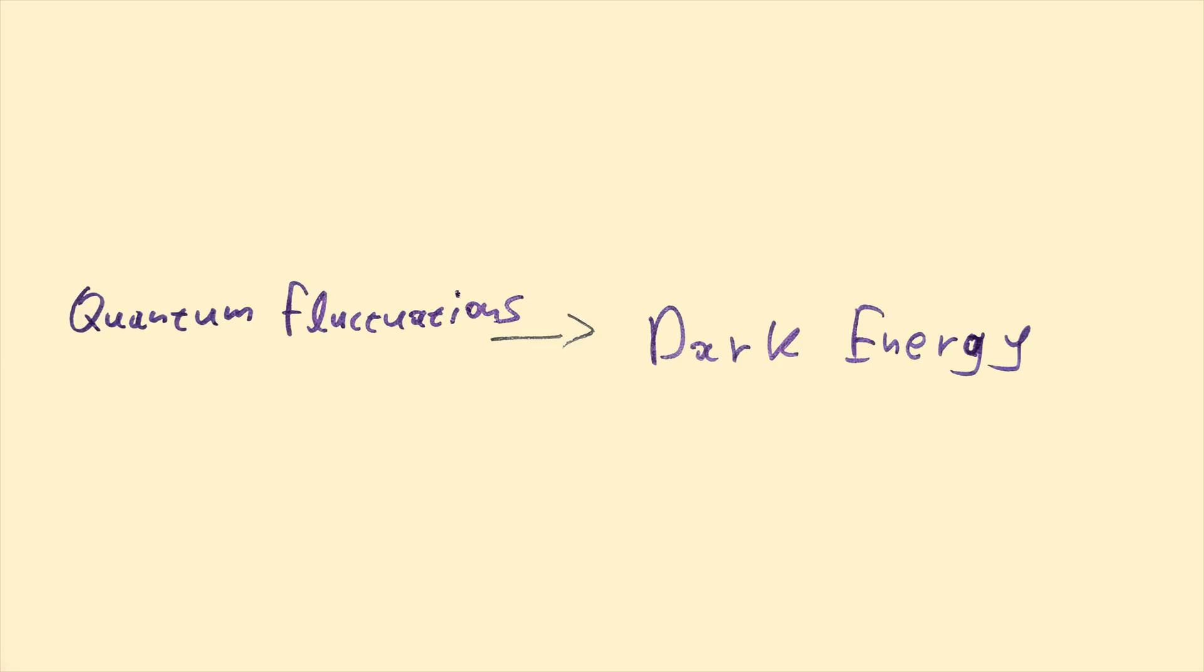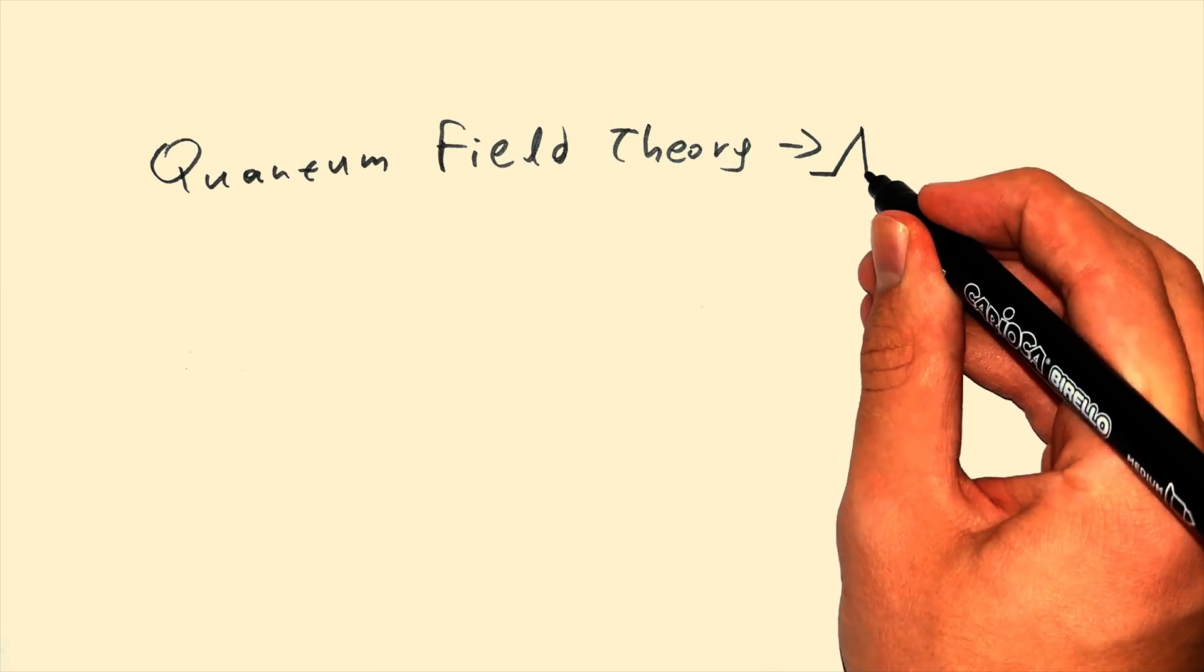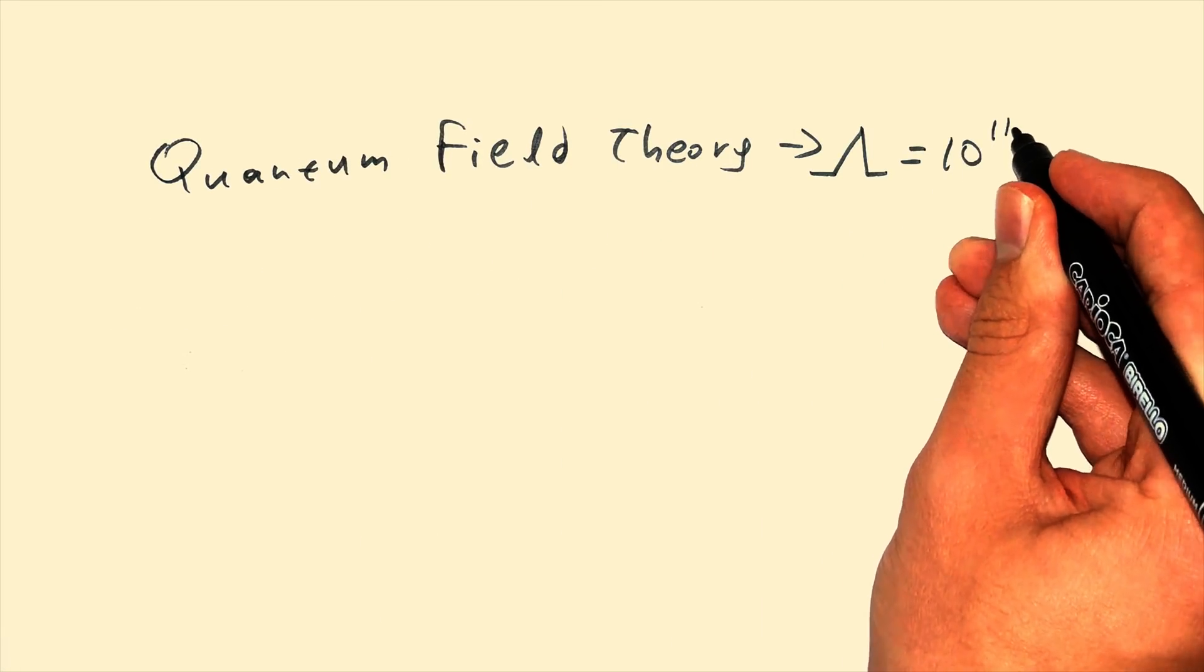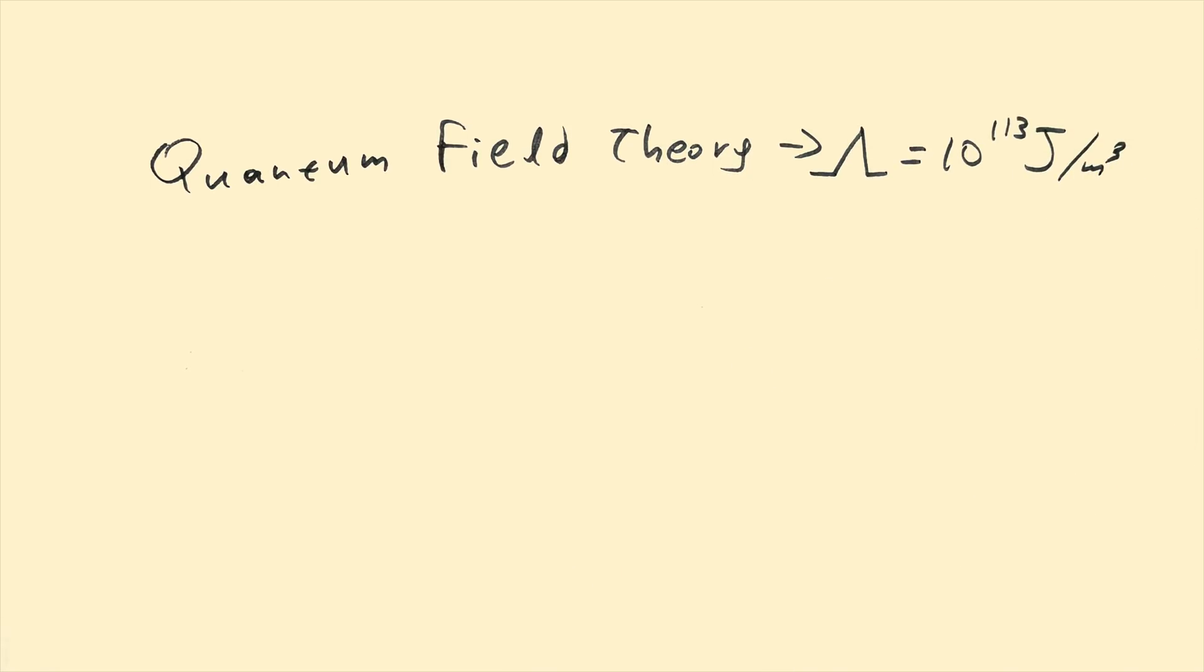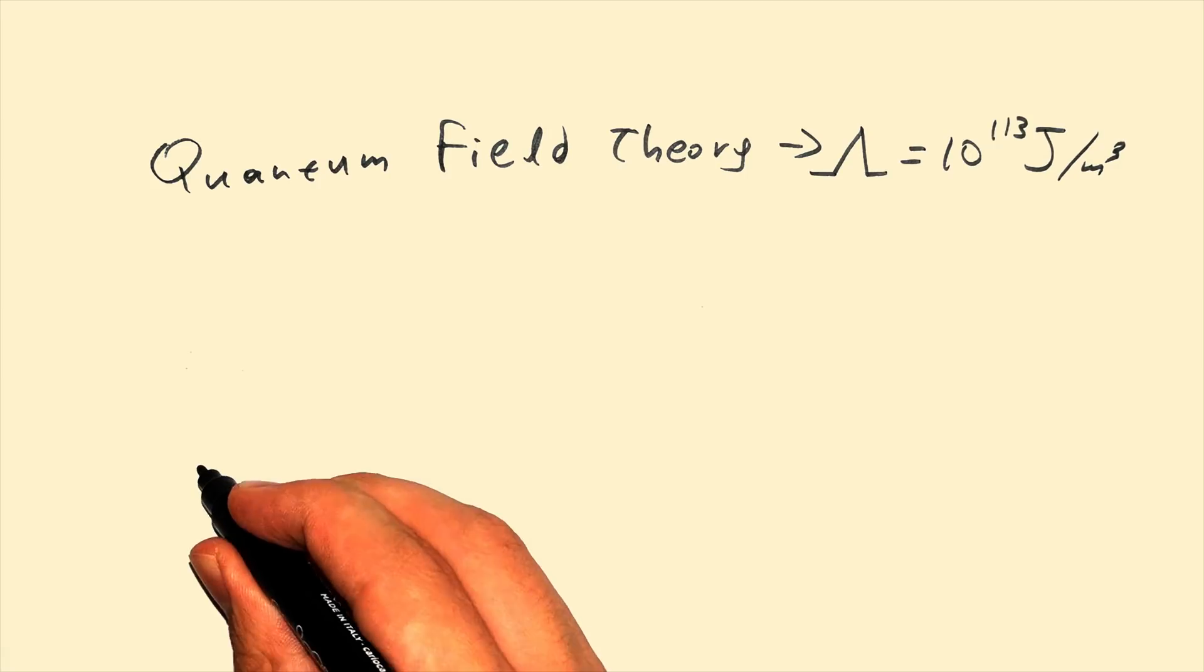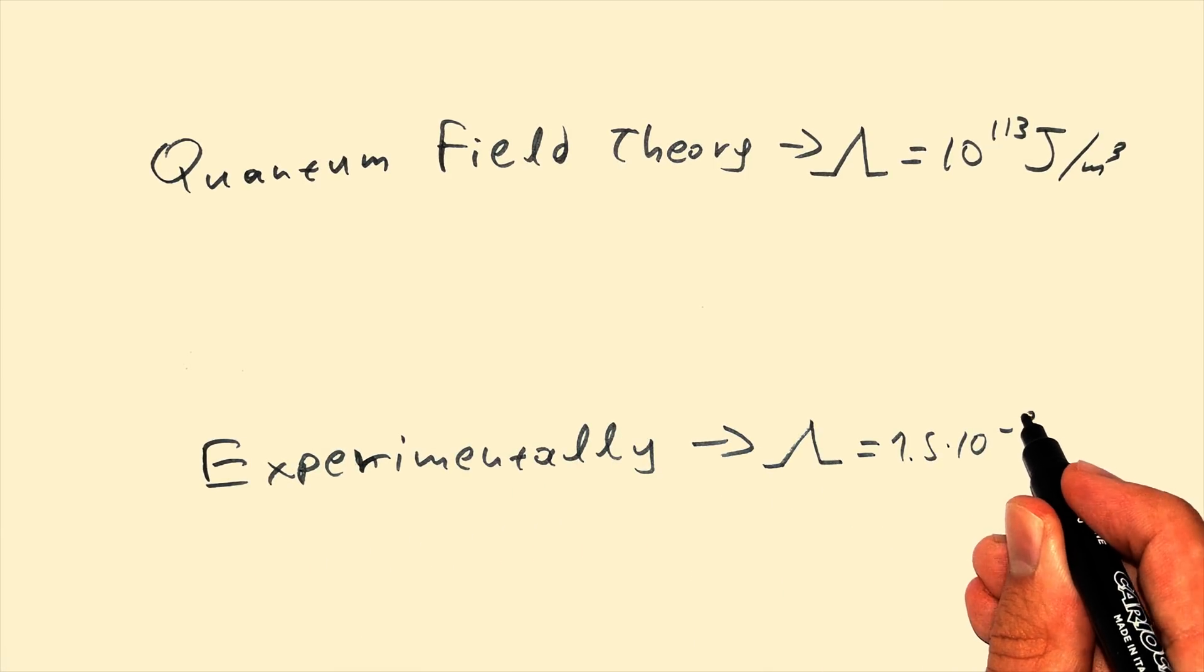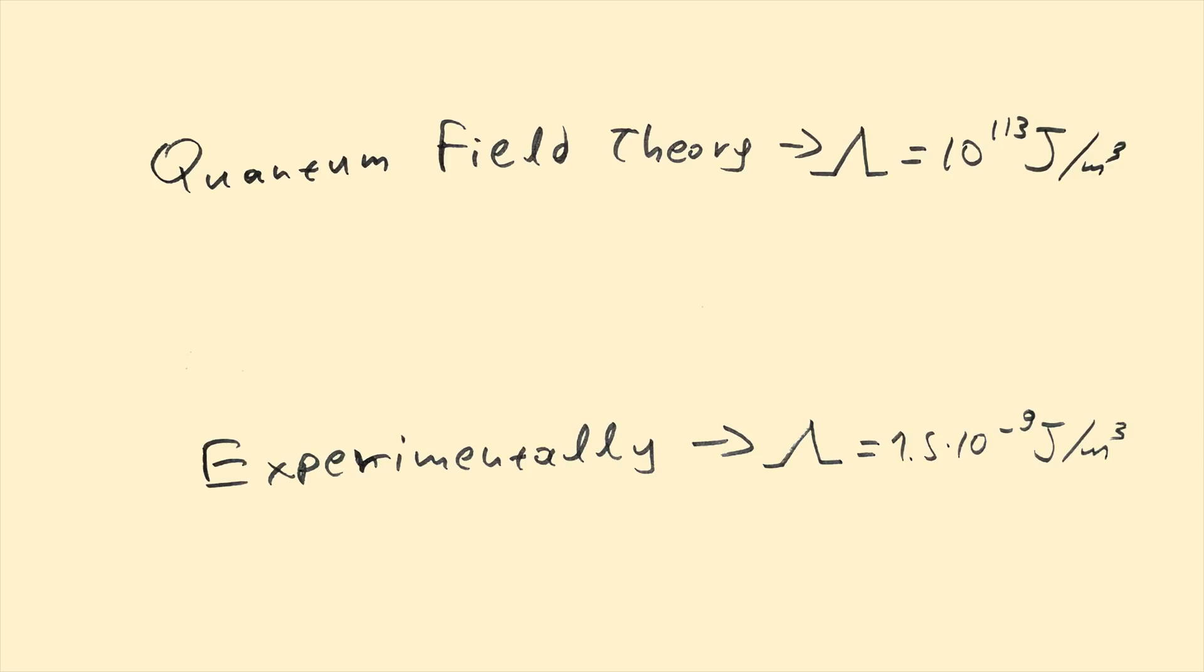But, if you apply the quantum field theory prediction of how much energy a cubic meter of vacuum contains just from quantum fluctuations, you conclude that lambda is 10 to the power of 113 joules per cubic meter. See the problem? Experimentally, we know that lambda is 1.5 times 10 to the minus 9, but QFT predicts a vacuum energy of 10 to the power of 113.